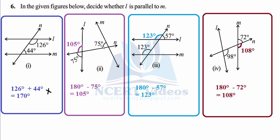Since 170° is not equal to 180°, l is not parallel to m in the first figure. In the second figure, one angle is 75°. Using the linear pair property — adjacent angles whose non-common arms are opposite sum to 180° — the supplementary angle is 180° minus 75° equals 105°. For corresponding angles to confirm parallel lines, both must be equal. Since 105° does not equal 75°, l is not parallel to m here either.